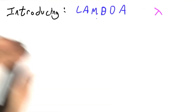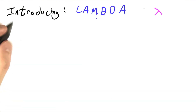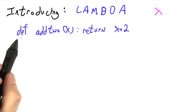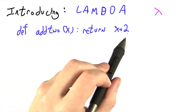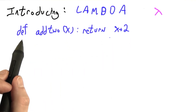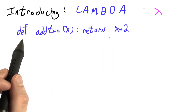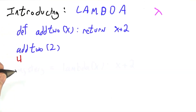I'm going to introduce you to a new type of expression in Python: lambda, which is another way of defining functions. Here I've written Python code to make a function add2 of x, which returns x plus 2. You can put a Python function like this all on one line as long as it fits. And if I write add2 of 2, I expect to get 4 out.